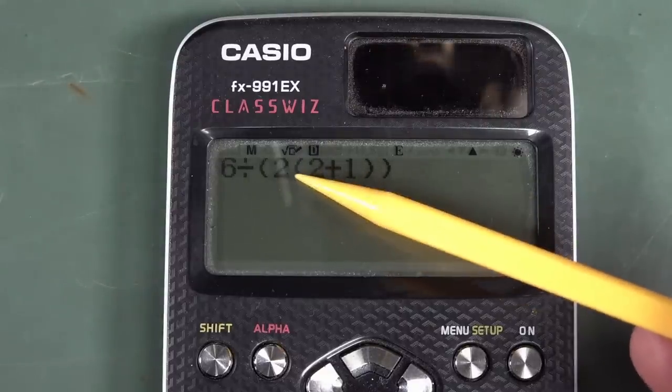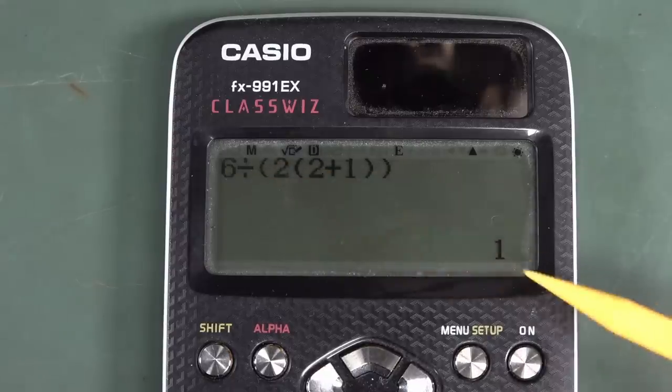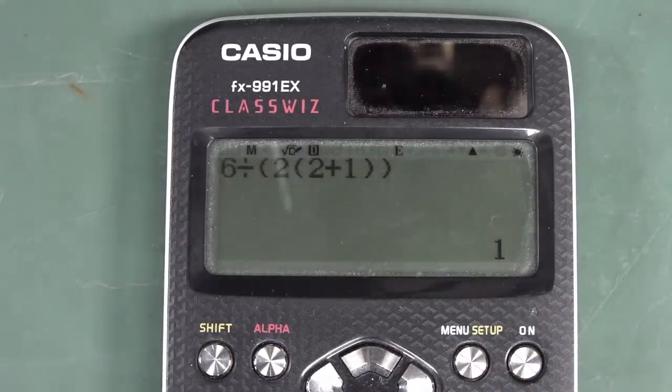We've essentially got, it does 2 plus 1, and I'll show you the order of operations in a minute, but it does 2 plus 1 first, because anything inside a parentheses takes priority. So it does 2 plus 1, which is 3, multiplied, implied, multiplied by 2, which is 6, and 6 divided by 6 is, of course, 1. So this is not a bug.